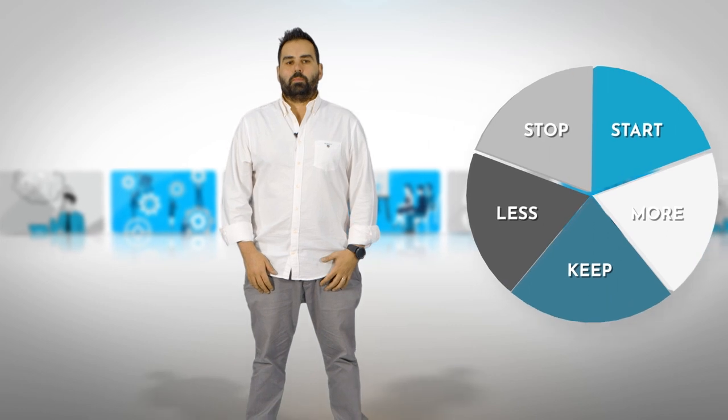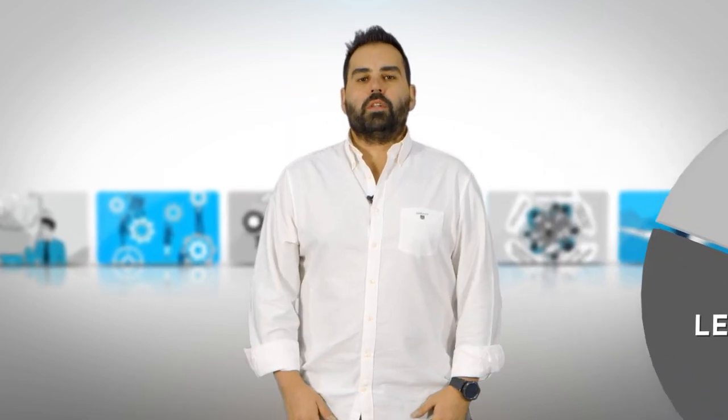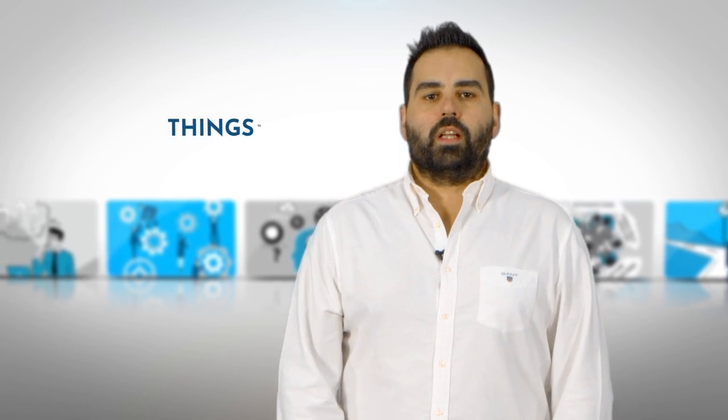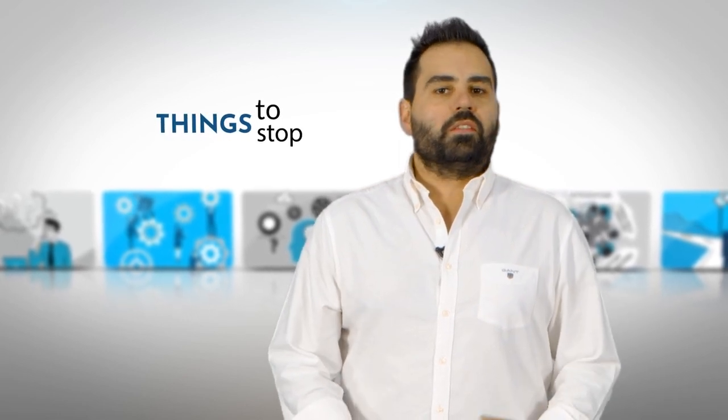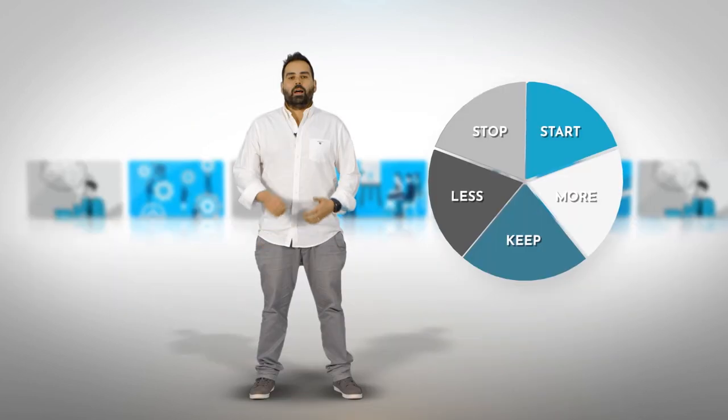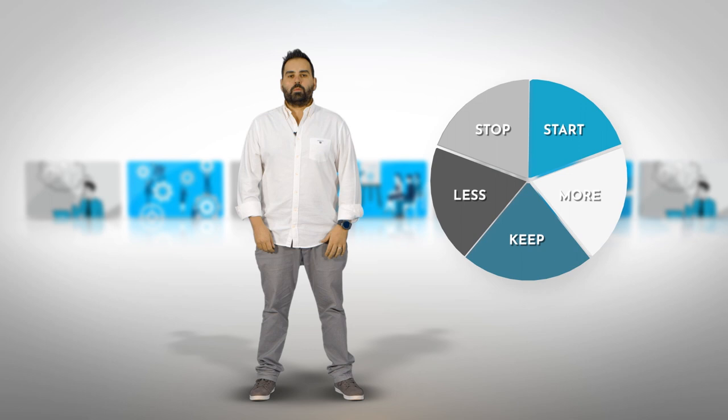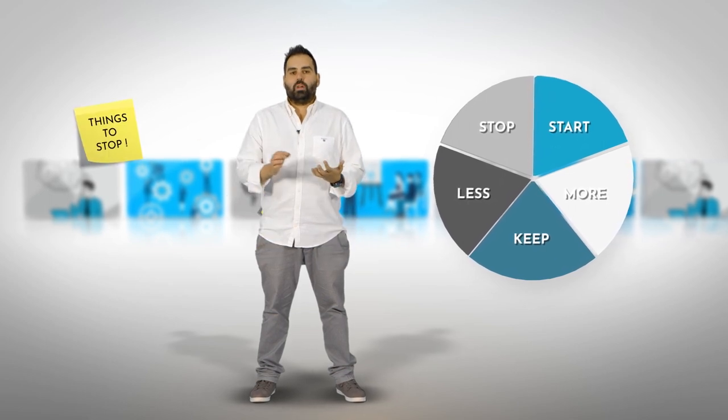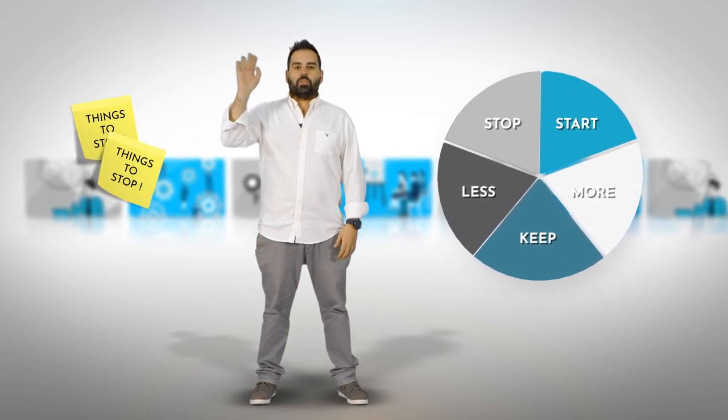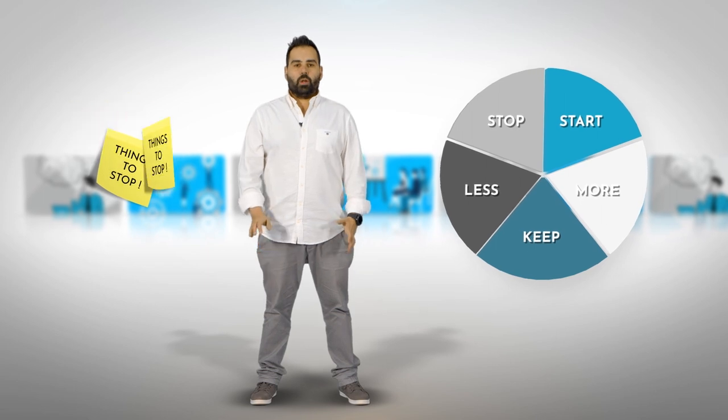The way you run this exercise is very simple. You can ask your team to think about all the practices, everything that went through the sprint that they want to stop. Things that did not go well and they literally want to stop. Ask them to brainstorm and put those actions into notepads, post-its, whatever. Just post them into the stop area.